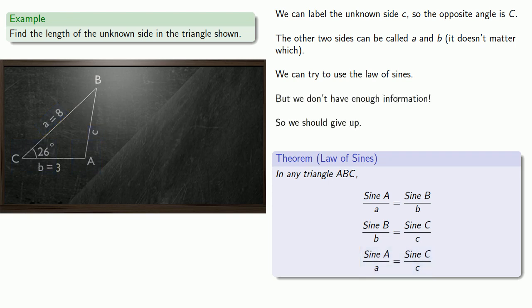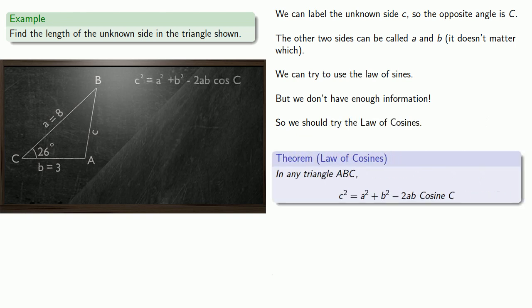So we should try the law of cosines. So in the law of cosines, we don't know c, but we do know a, b, and the angle C, so we can use this equation. So I'll substitute in our values, which will give us the measure of the side c.